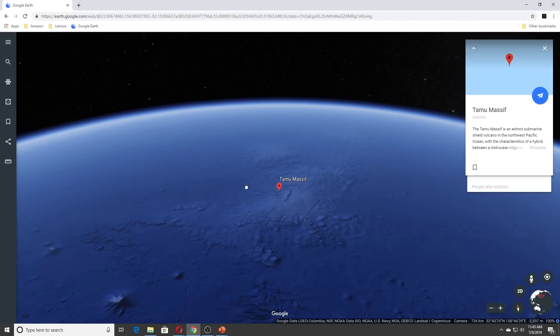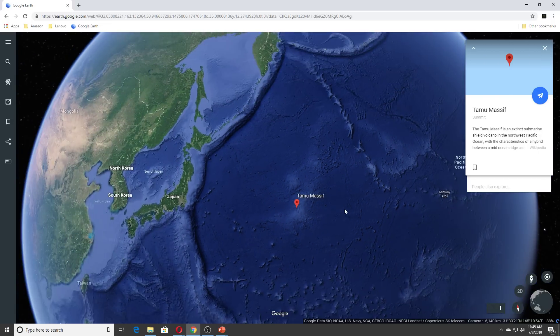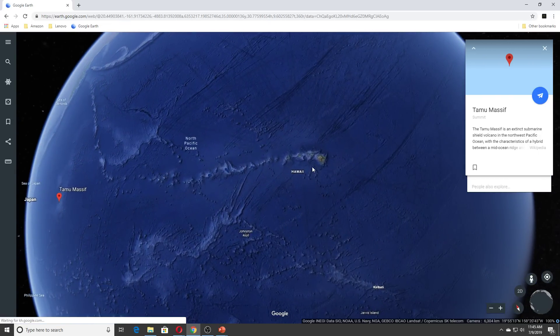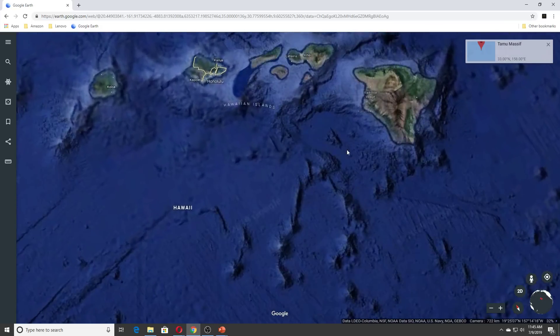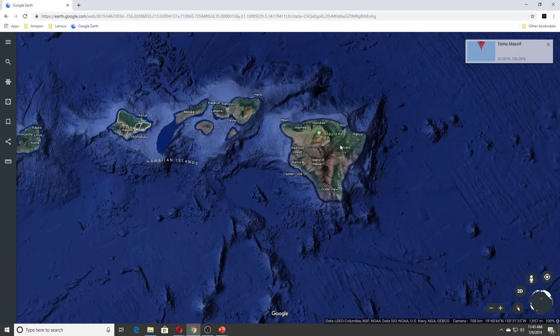And of course, you all know Mauna Loa, so we'll show you where Mauna Loa is. Mauna Loa is, this is Manikia, so Mauna Loa is over here.